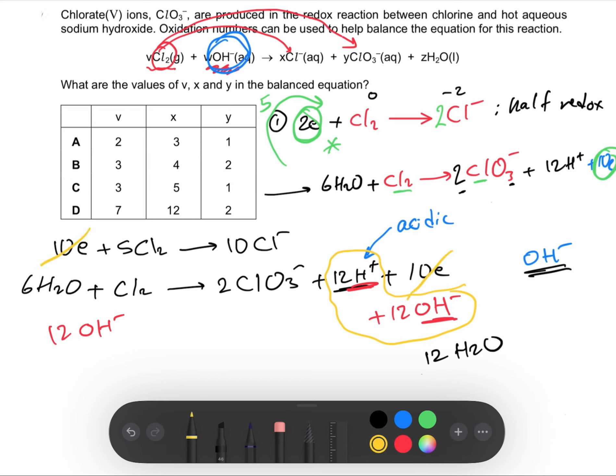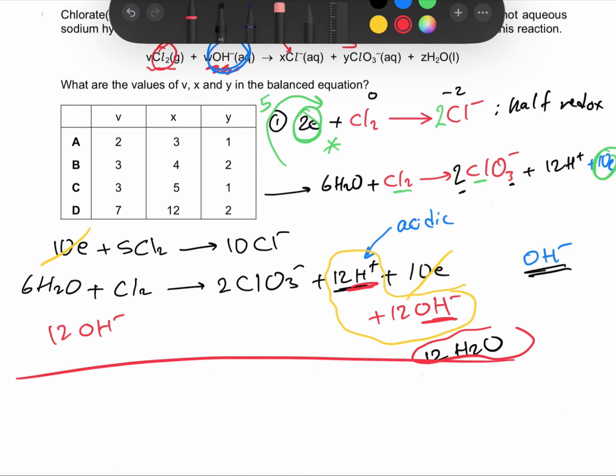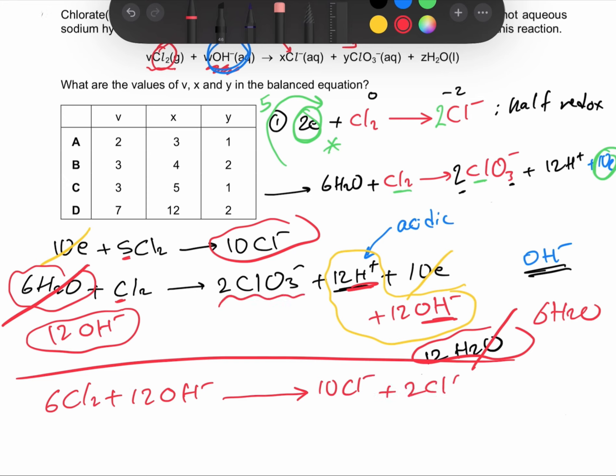The electrons here are cancelled. Now let's rewrite those things again. Since we have 12 water molecules on this side and 6 here, they are subtracted from each other, so we will have 6 H₂O on here. Those are cancelled. We have 5 plus 1 Cl₂, so it's 6Cl₂ plus 12 OH⁻, which gives 10Cl⁻ plus 2ClO₃⁻ plus 6H₂O.